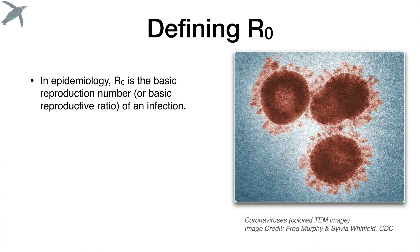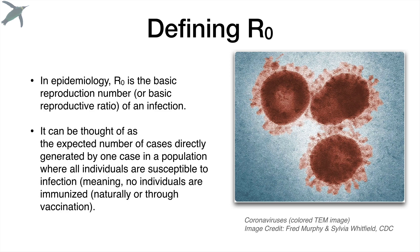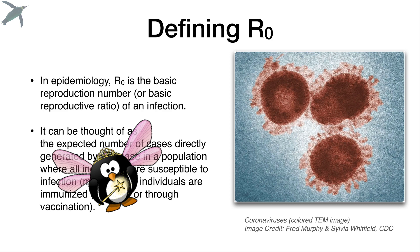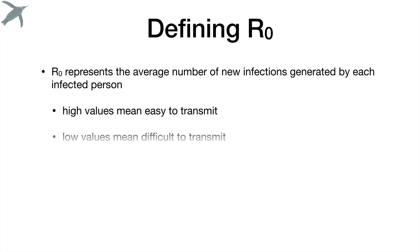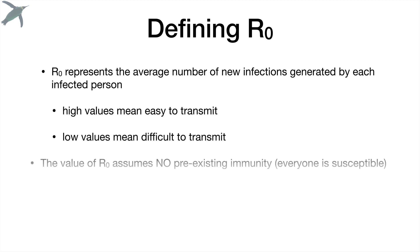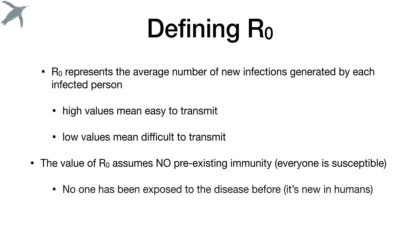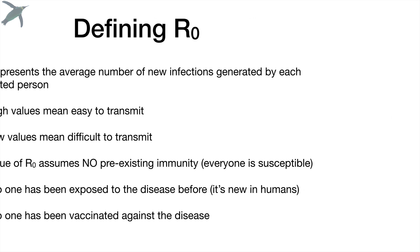R-naught is an epidemiological term — it is the basic reproduction number or ratio. It is not a rate. R-naught represents the average number of new infections generated by each infected person. High values mean it's easy to transmit and low values mean it's difficult to transmit. There's a big assumption here: it assumes no pre-existing immunity, meaning everyone is susceptible — no one has been exposed to the disease before, so it's new in humans, and no one has been vaccinated against it. Those are really important assumptions.